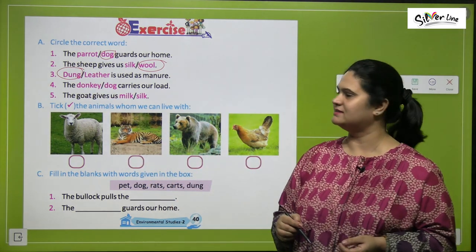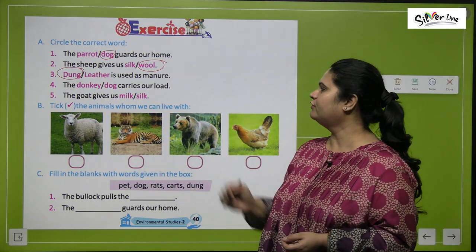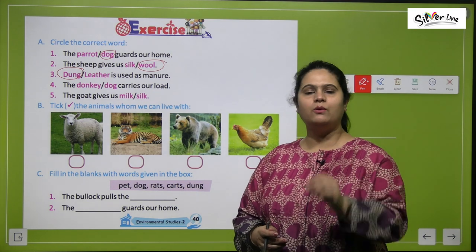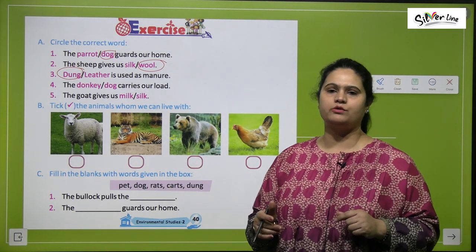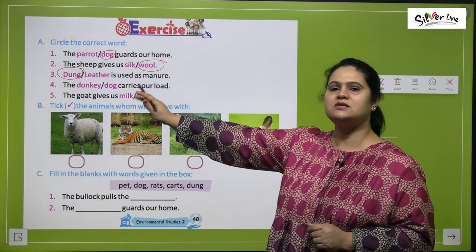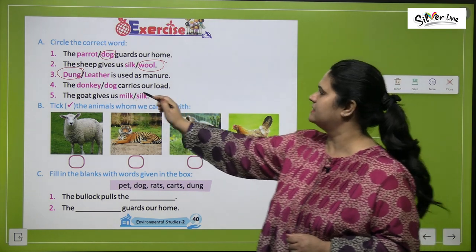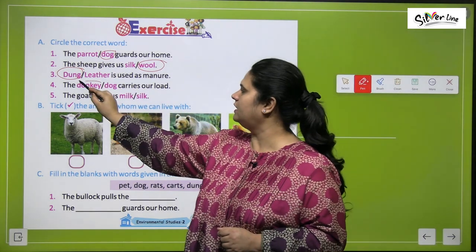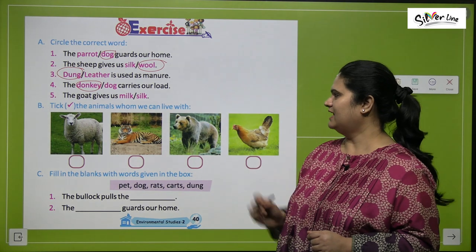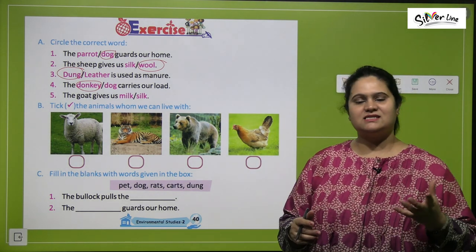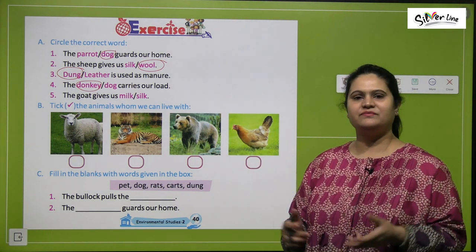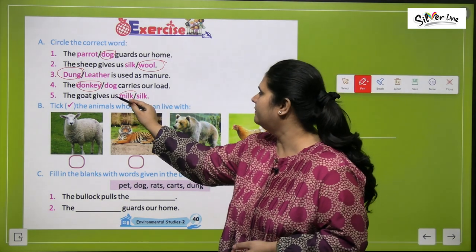Number four: which animal carries our load — donkeys or dogs? Donkeys carry our heavy load. Number five: the goat gives us milk or silk? They give us milk.